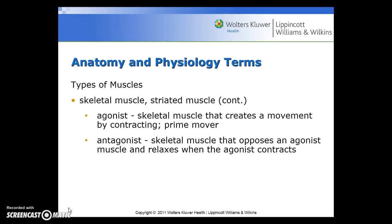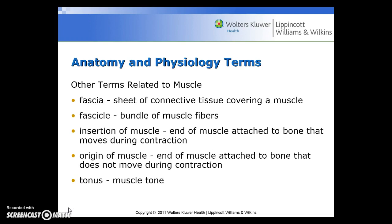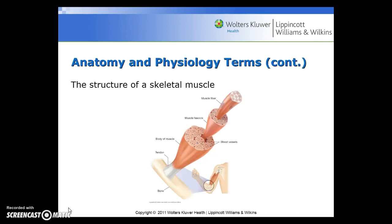When we talk about types of muscles, an agonist is the skeletal muscle that creates movement by contracting as a prime mover. An antagonist is the skeletal muscle that opposes an agonist muscle and relaxes when the agonist contracts. Other terms related to muscle: the fascia is a sheet of connective tissue covering a muscle. The fascicle is a bundle of muscle fibers. Insertion of muscle is the end of the muscle attached to the bone that moves during contraction. The origin of muscle is the end of a muscle attached to a bone that does not move during contraction. Tonus refers to muscle tone. Here you can see an additional diagram of the structure of a skeletal muscle, including the muscle fiber, the muscle fascicle, the body of the muscle, the tendon, blood vessels, and then the bone.